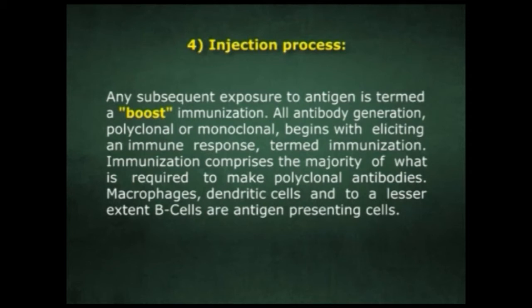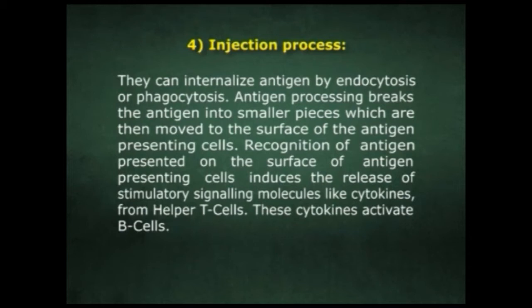All antibody generation, polyclonal or monoclonal, begins with eliciting an immune response, which is termed immunization. Macrophages, dendritic cells, and to a lesser extent B cells are antigen-presenting cells. They can internalize antigen by endocytosis or phagocytosis. Antigen processing breaks the antigen into smaller pieces, which are then moved to the surface of the antigen-presenting cells.